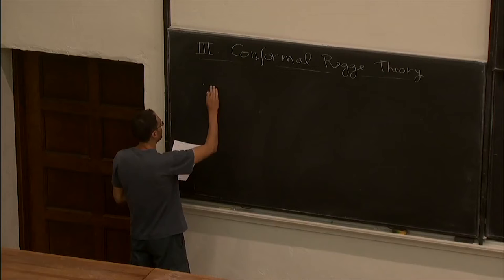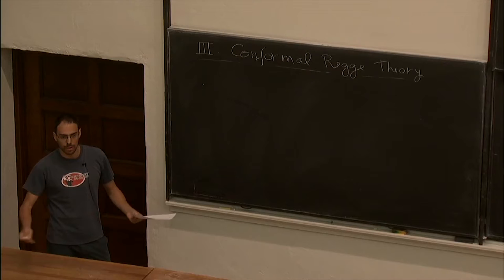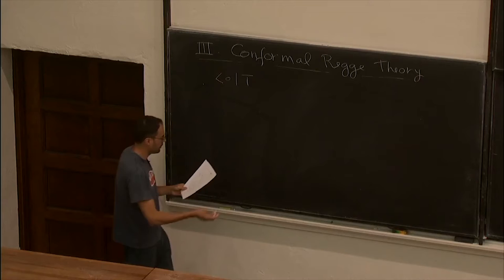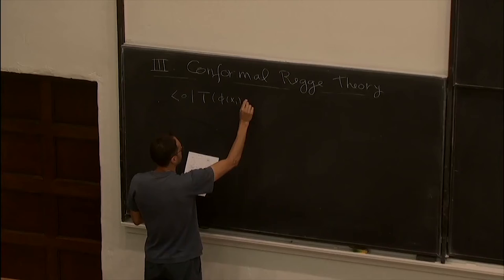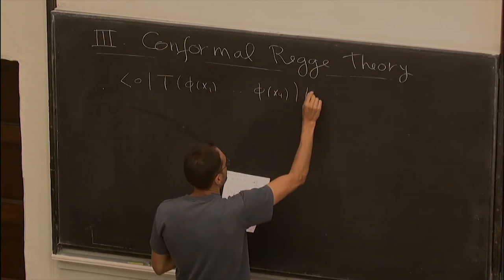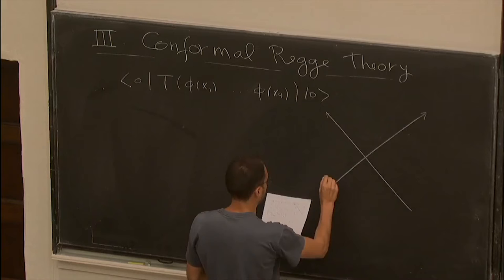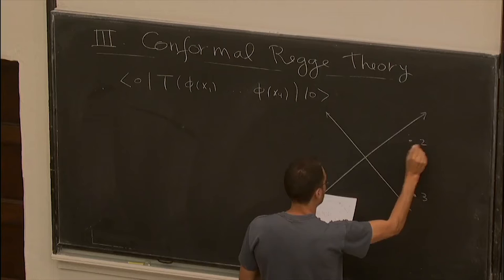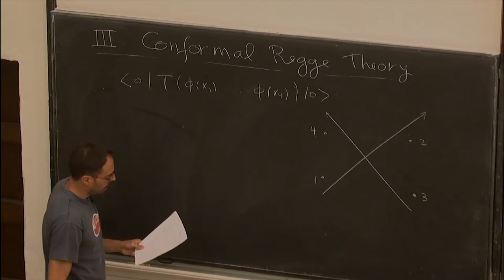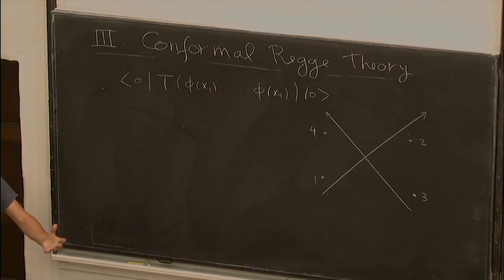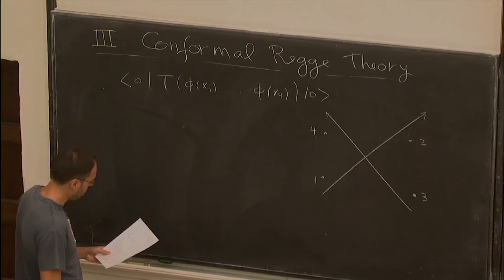The first obstacle is which observable to look at. There are no scattering amplitudes in conformal field theory, so we need to look at a different observable. We're going to look at a four-point function, using notation similar to David's lectures. I'll put the points with the same causal relations David explained: one, three, two, and four. It's a time-ordered correlator. The question is what is the right kinematical limit — the Regge limit — that is the analog of high energy scattering for a massive quantum field theory.